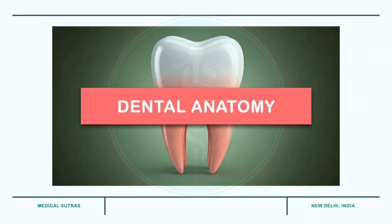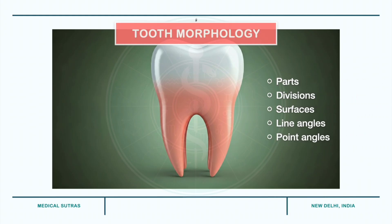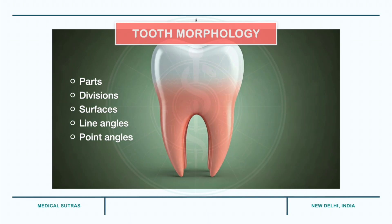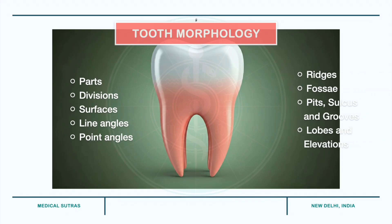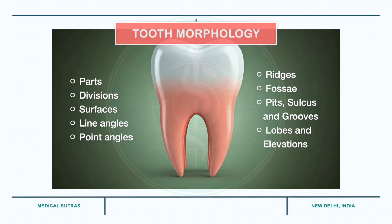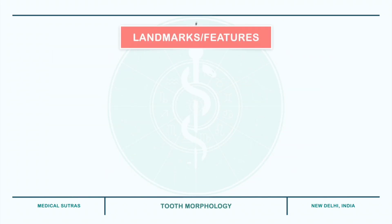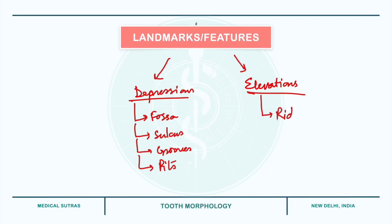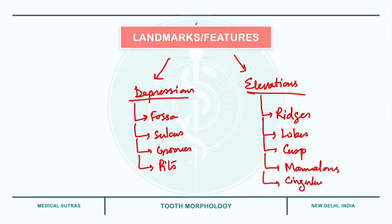Hello everyone, welcome to the series on dental anatomy. In the last video we discussed tooth morphology, that is the parts and divisions of tooth surfaces, line angles and point angles. In this video we will continue with the topic and learn about important landmarks or features present on the tooth surface such as ridges, fossa, pits, sulcus and grooves. These features can be grouped into two categories: depressions and elevations. Depressions include fossa, sulcus, grooves and pits, while elevations include ridges, lobes, cusp, mamelons, cingulum and tubercle.